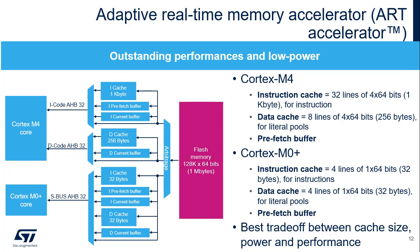The Cortex-M4 instruction cache contains 32 lines of 4 double words, and the data cache has 8 lines of 4 double words. Once all the instruction cache memory lines have been filled, the LRU — or Least Recently Used Policy — is used to determine the line to replace in the instruction memory cache. This feature is particularly useful when code contains loops. This architecture is chosen to provide the best trade-off between cache size, power consumption, and performance. After each miss, the cache is updated with only the requested double word in order to limit the flash access for power saving.